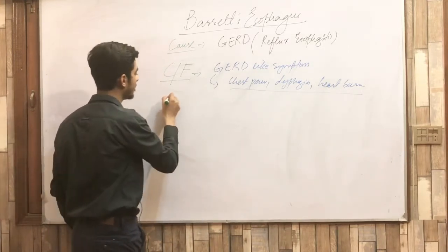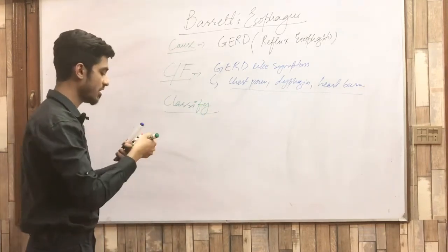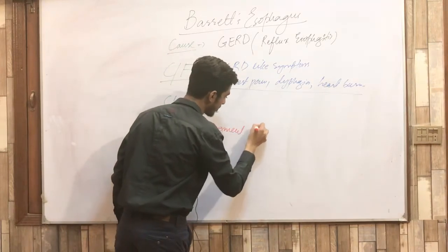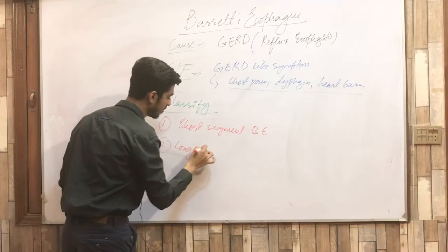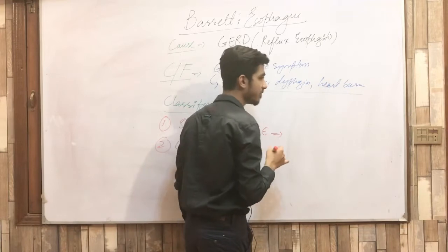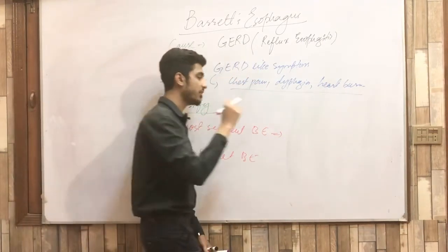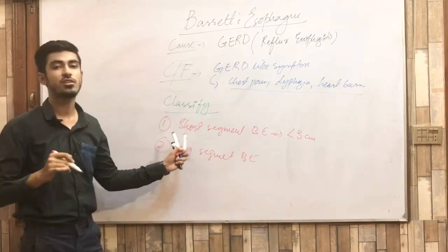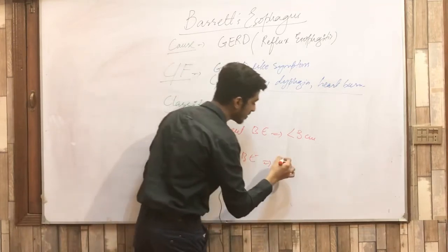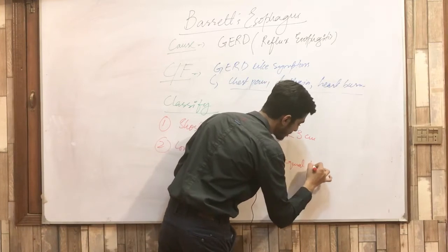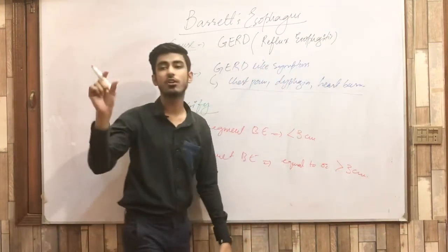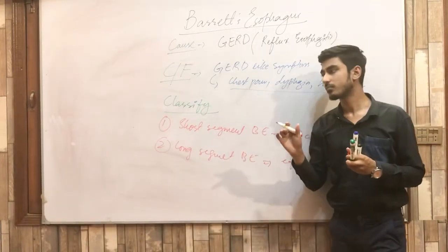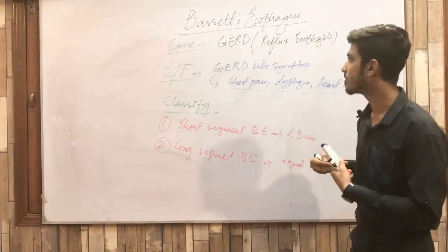Barrett's esophagus is classified into two types. Number one is short segment Barrett's esophagus, and number two is long segment Barrett's esophagus. Short segment Barrett's esophagus is when the area of metaplasia is less than 3 centimeters. If the area of metaplasia is equal to or greater than 3 centimeters, it is called long segment Barrett's esophagus.